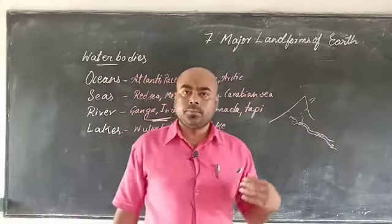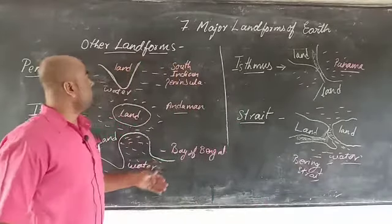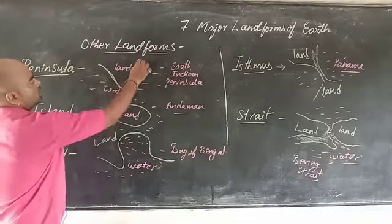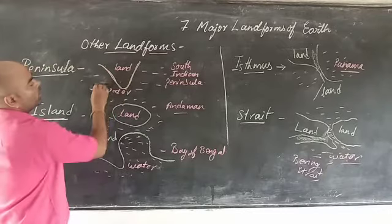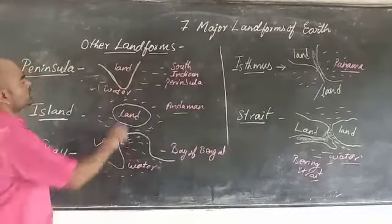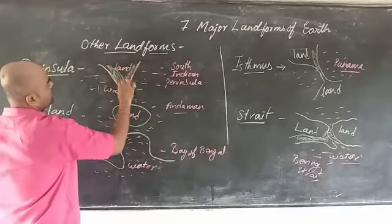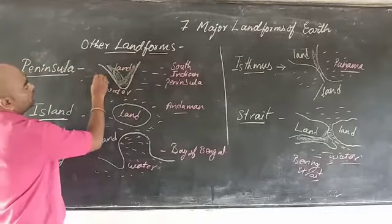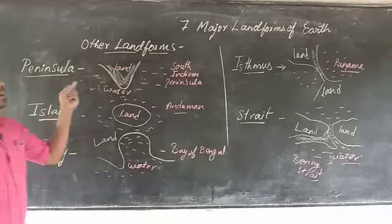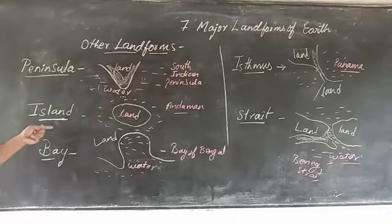Now moving on to other landforms. First is peninsula. A peninsula is a land area surrounded on three sides by water. For example, the South Indian Peninsula.